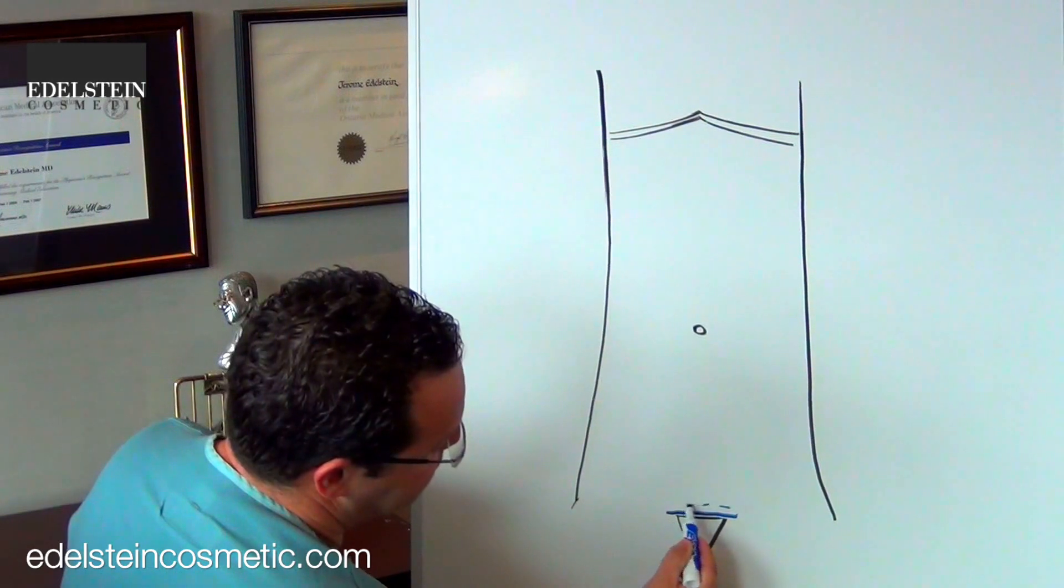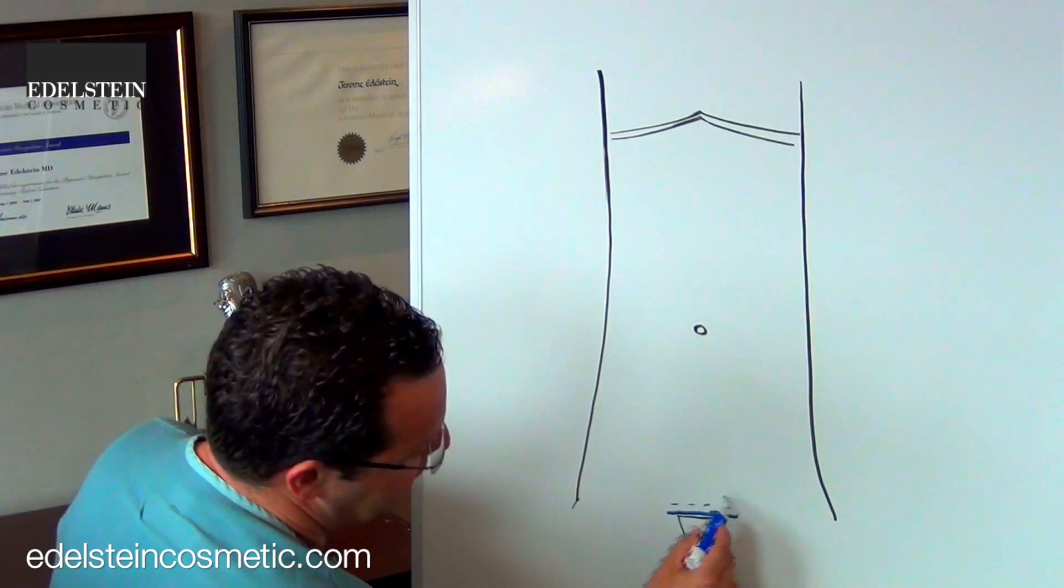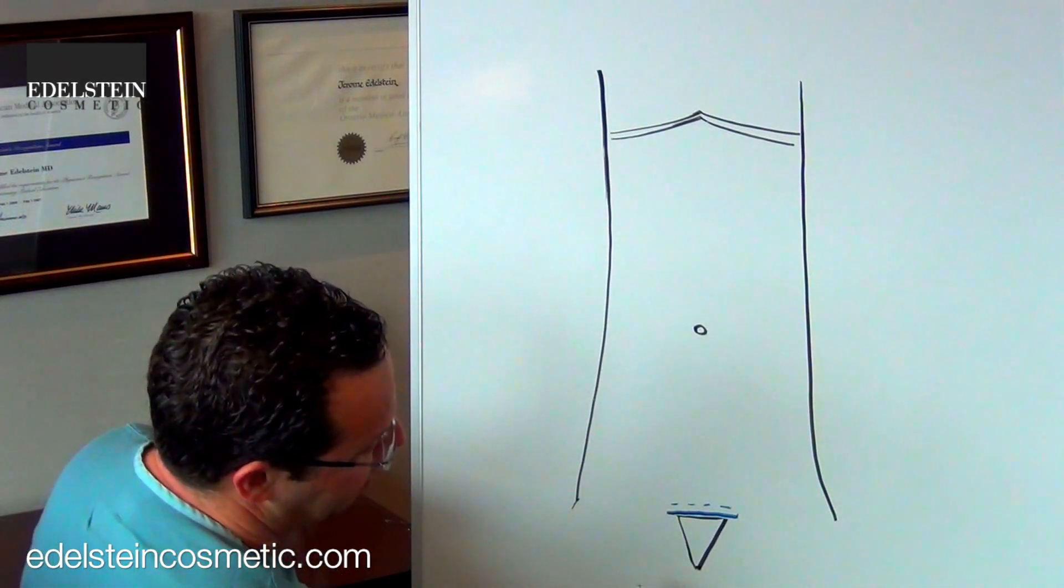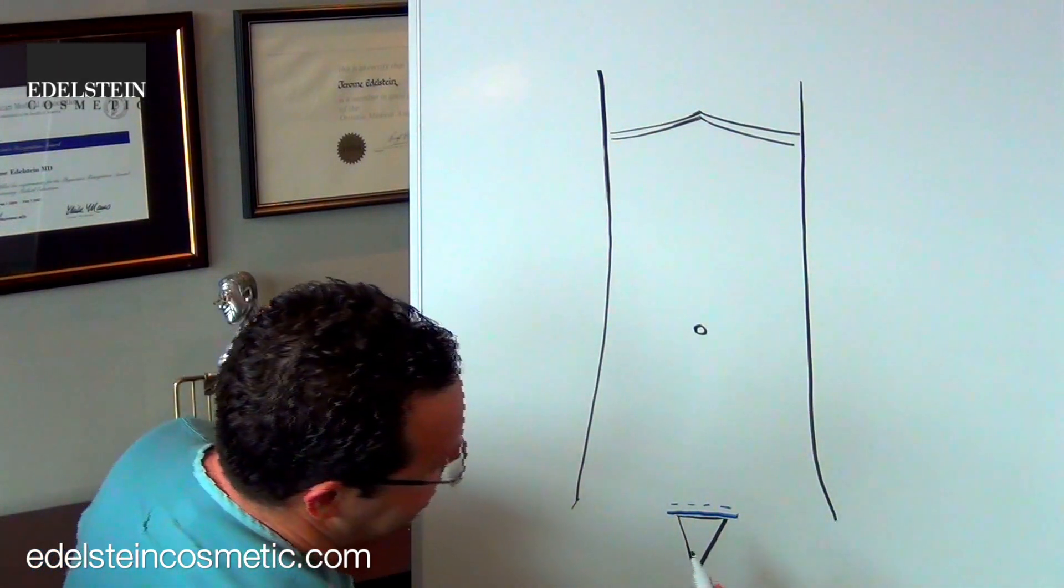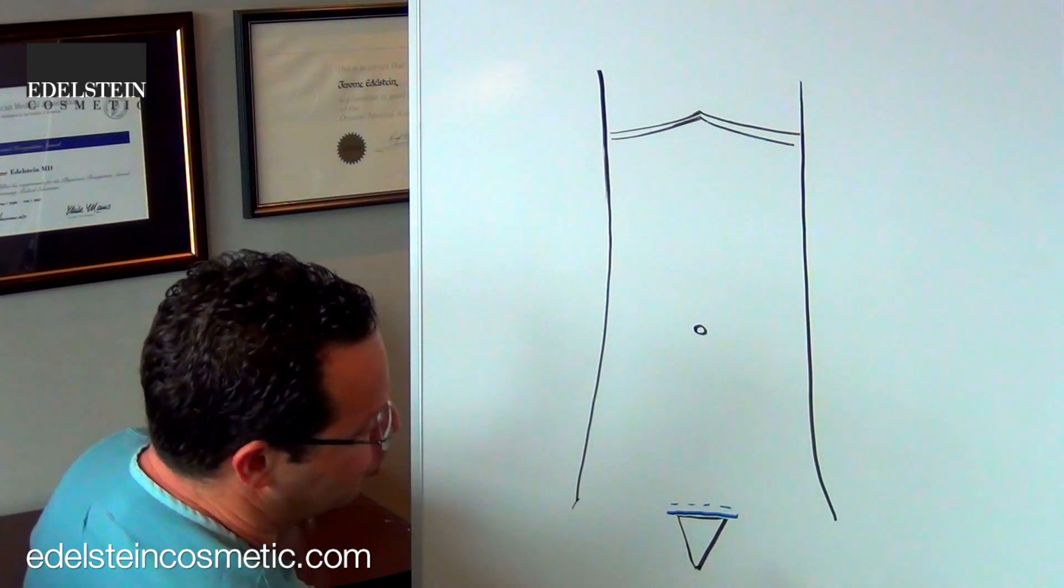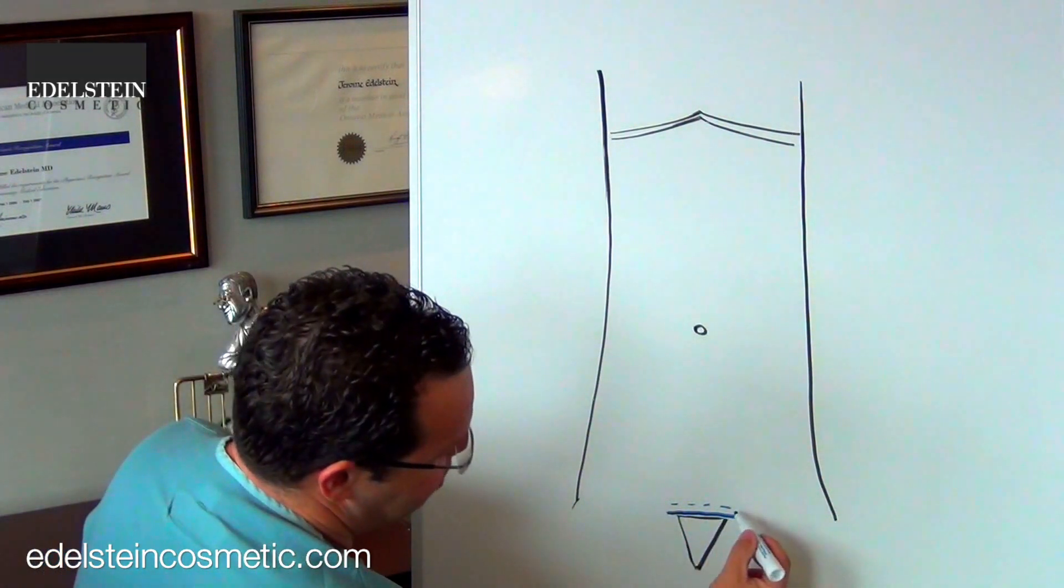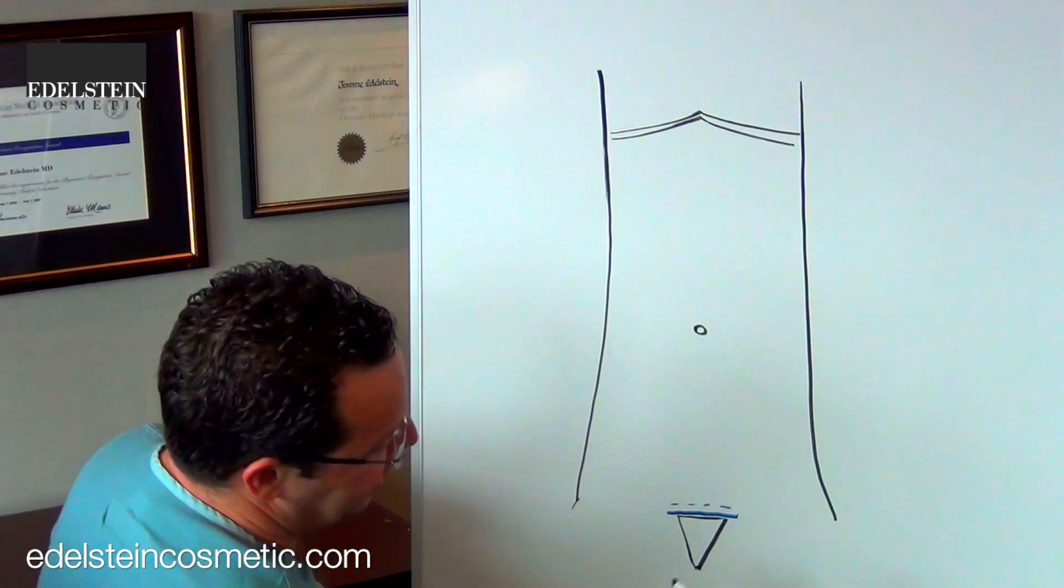The incision for a full tummy tuck generally does go hip to hip from above the pubic area. It will angle slightly upwards in the groin crease, generally almost one side to the other.